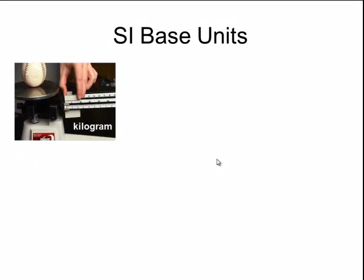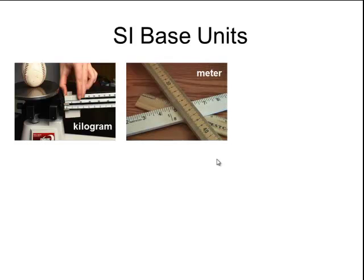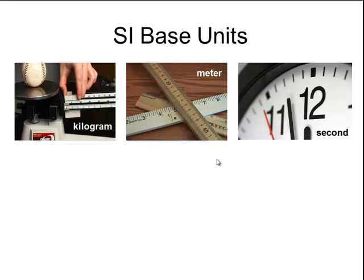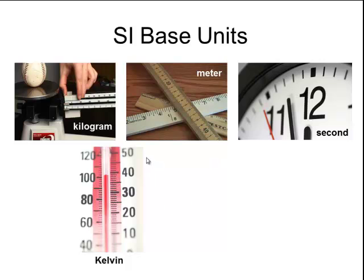For mass, we use the standard unit of kilogram. For length, we use a standard unit of meter. Time is always measured in seconds. Temperature has the standard unit of Kelvin, although in chemistry we commonly use Celsius. The SI base unit, or the standard unit, is Kelvin.